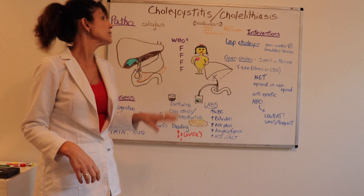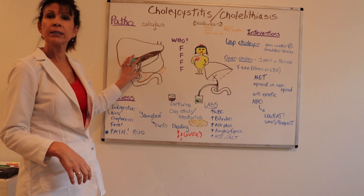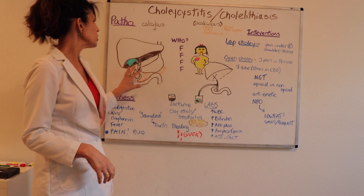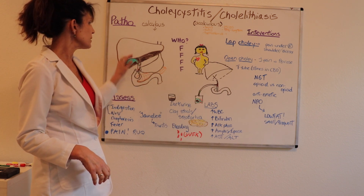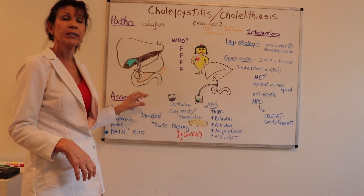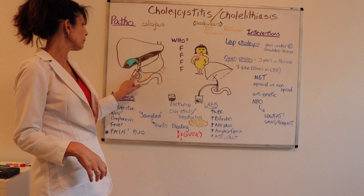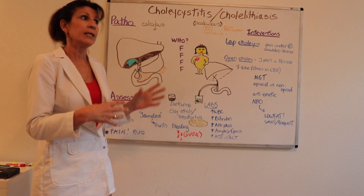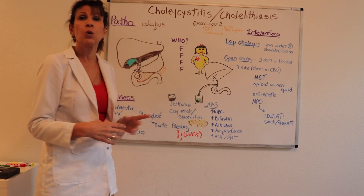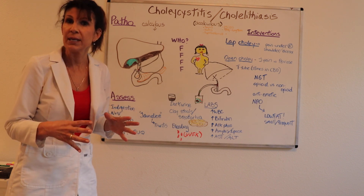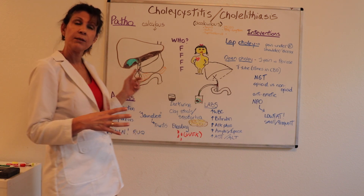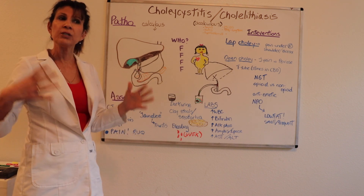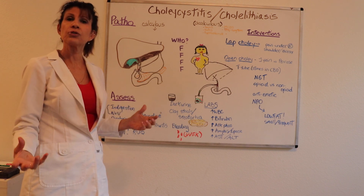Jaundice occurs because bile contains the pigment bilirubin. When it is not being secreted properly into the duodenum — and the organ is infected — that pigment in the bile is able to absorb into the central circulation.